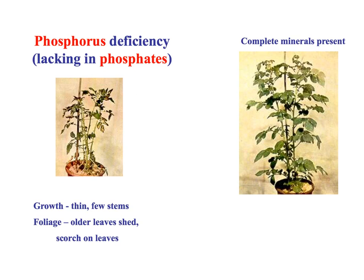Phosphorus deficiency: the plant lacking in phosphates. On the right we have what a plant with a complete mineral supply would look like. If we look at growth, we've got thin, very few stems - really obvious in this portion of the image. In terms of foliage, the leaves look older, they're shedding more, and we've got scorch on the leaves. You can see there is a real serious deficiency there.